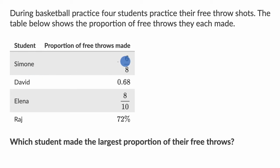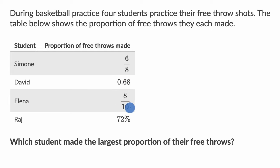Simone made six-eighths of their free throws. David made 68 hundredths of his free throws. Elena made eight-tenths of her free throws, and Raj made 72% of his free throws.